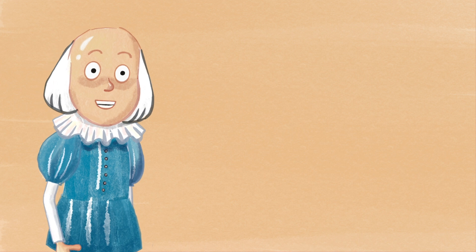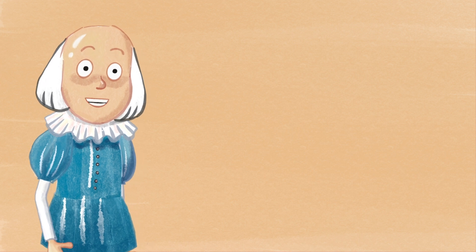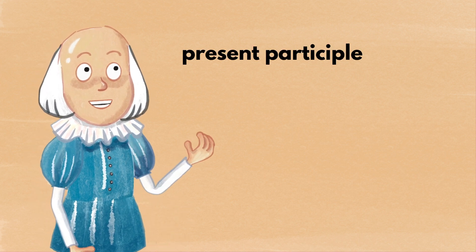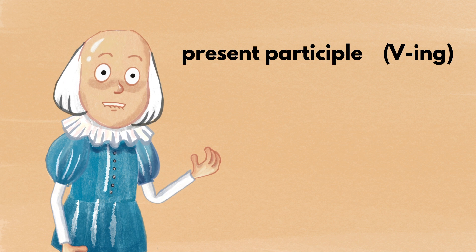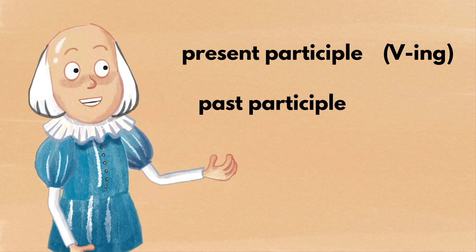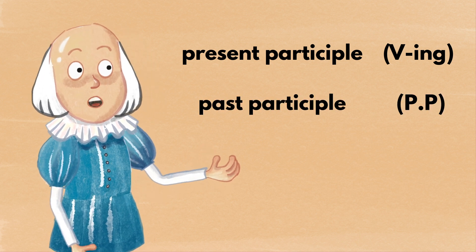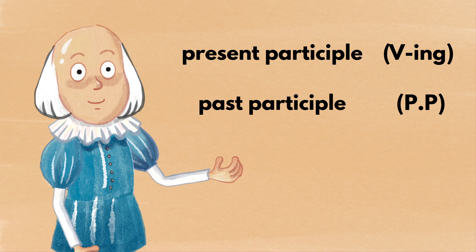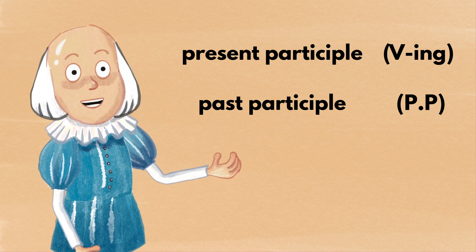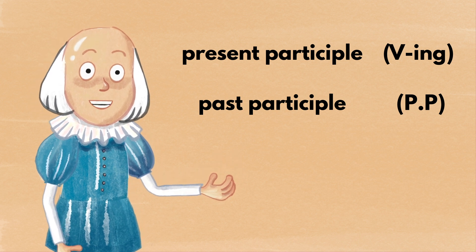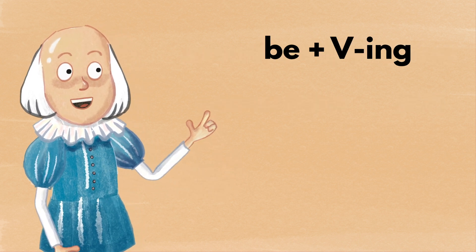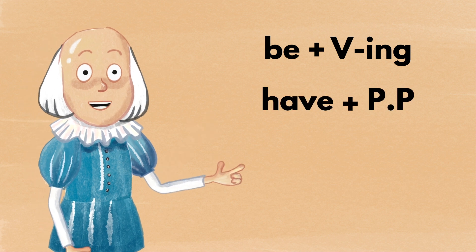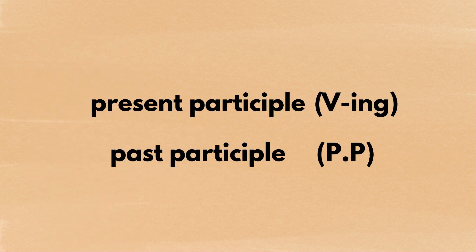Before we start learning tenses, we must understand what a present participle, also known as the ing form of a verb, is, and what a past participle, also known as pp, is. They're important because in a minute you're going to hear a lot of stuff that sounds like be plus ing or have plus pp. So what are the present and past participles?